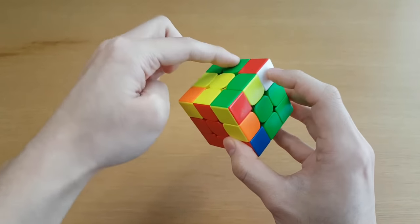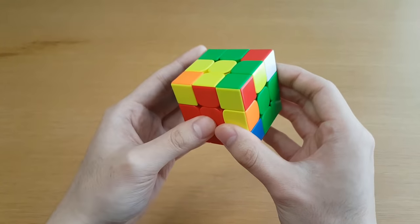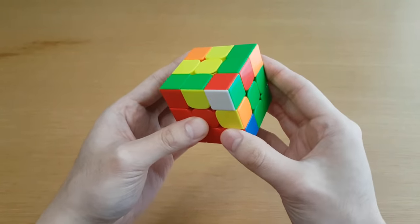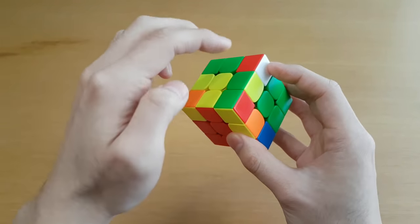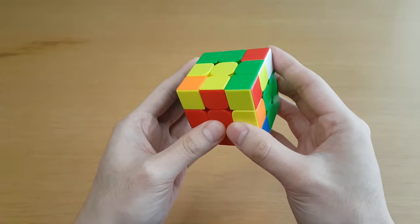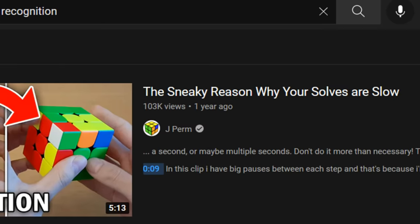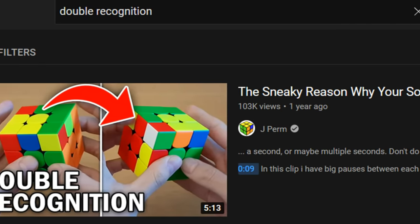This also applies to F2L. If you see this case, do you know right away what case this is? A lot of people have the habit of always moving it to the front before seeing what case it is, when technically this is enough information. You just have to practice trying to deduce this case rather than always moving it to the front and pausing to recognize the case. I have a whole video about this as well which goes over many common cases where people use double recognition.